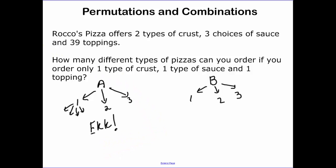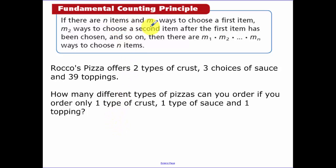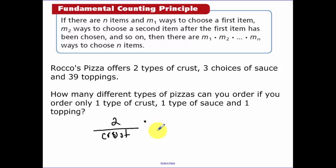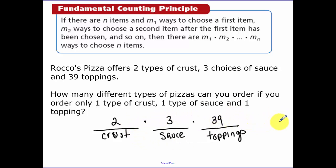There's a shorter way though — the fundamental counting principle. If there are N items, and M-sub-1 ways to choose the first item, and M-sub-2 ways to choose the second item, and so on, the total number of outcomes is M1 times M2 times all the way through MN. So for our pizza: two types of crust times three choices of sauce times 39 toppings gives us 234 possible types of pizza at Rocco's.